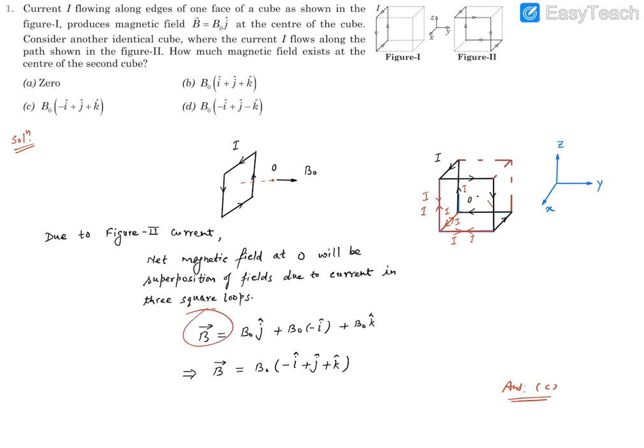So net field is going to be B0 J cap, because of this one, B0 minus I cap, because of this front one, and B0 K cap, because of this bottom one. So we can say the net field is going to be B0 times minus I cap plus J cap plus K cap, and you'll find C option says the same thing. Hence C becomes the correct option.